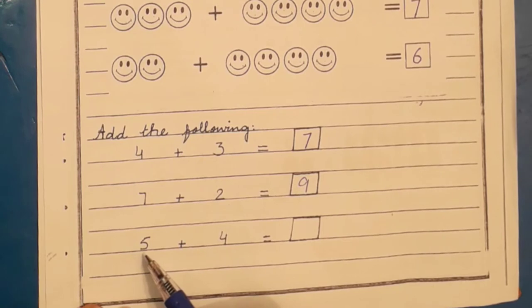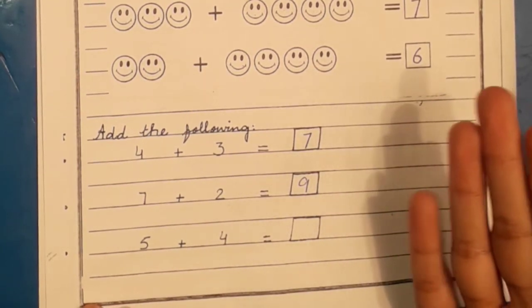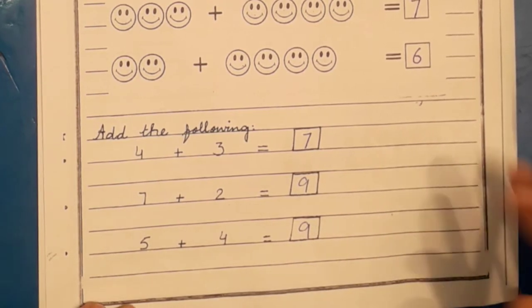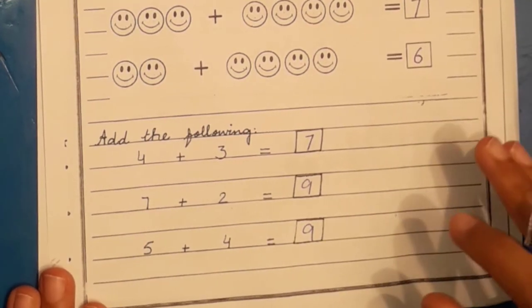Now we have next five plus four. We will add five to the next four numbers. We will count. Six, seven, eight, nine. So the answer is nine. I hope that you understand that the number of objects through and numbers through which we have added.